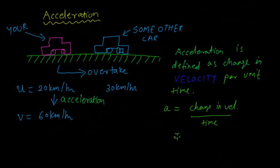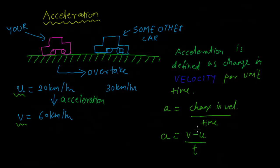It is important to understand the concept of change in any quantity. Change in any quantity is defined as the difference between the final quantity and the initial quantity. So change in velocity is final velocity minus initial velocity upon time: (v - u) / t. You can never write it as u minus v upon t — it must always be final minus initial.